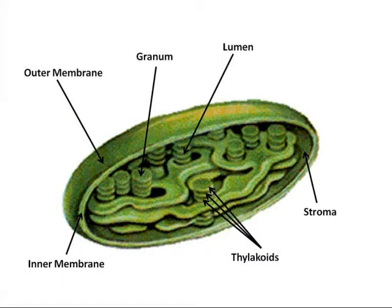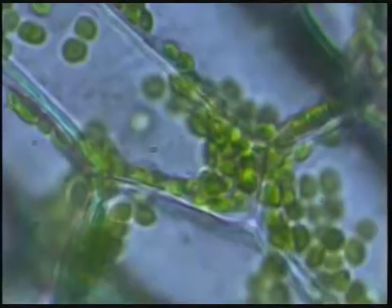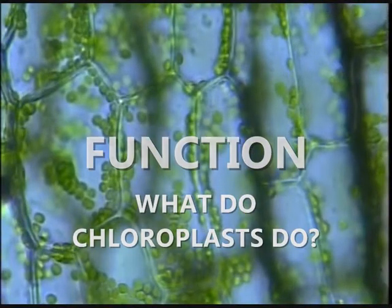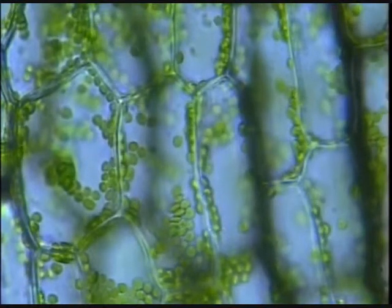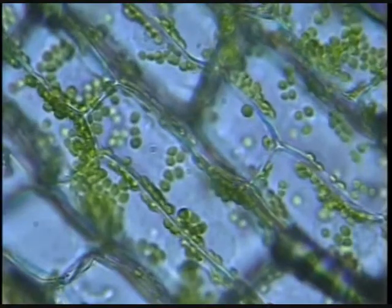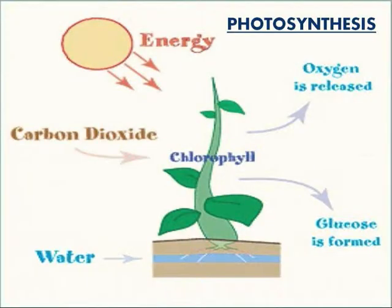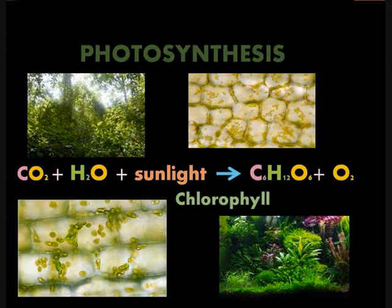Knowing this basic structure will help us to better understand the complex function of the chloroplast, which we will now explore. Chloroplasts contain an important chemical in them called chlorophyll, which is the reason that plants are green. This chemical is responsible for the absorption of sunlight to produce glucose. In the chloroplasts, chemical reactions occur for this purpose.